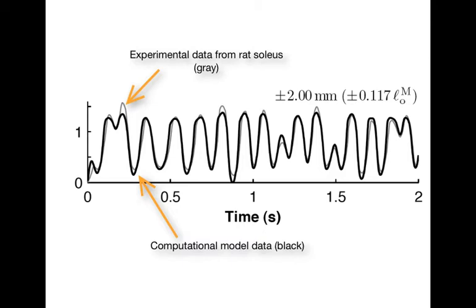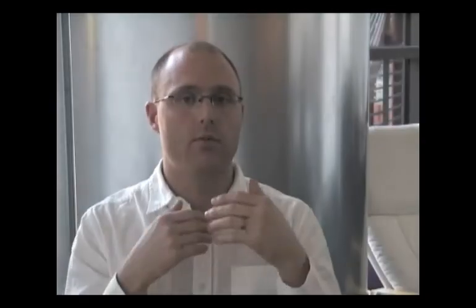We did exactly the same experiment with our computational model, and you can see in black that the black curve is very close to the gray curve, so we know that our muscle model is quite accurate.